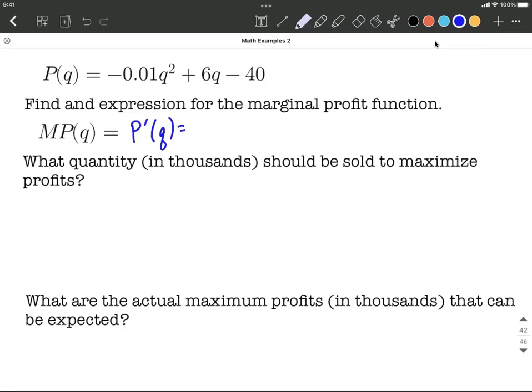So we're going to use the power rule a couple times here. Go ahead, bring down the two, multiply it by the negative 0.01. We get negative 0.02. Reduce the exponent by one, that'll be Q to the first power.